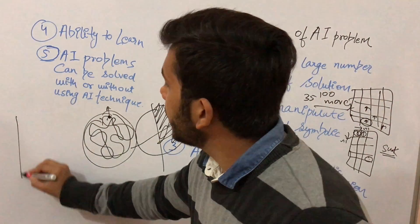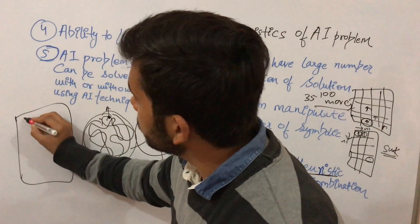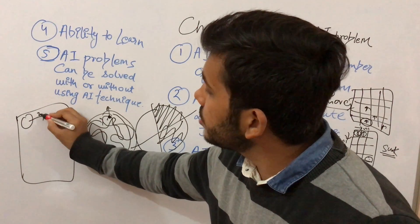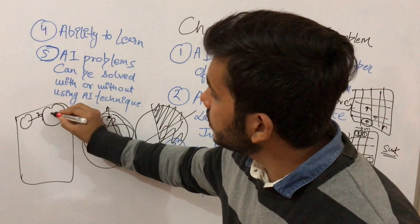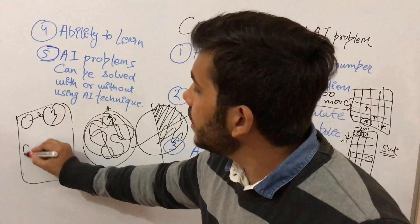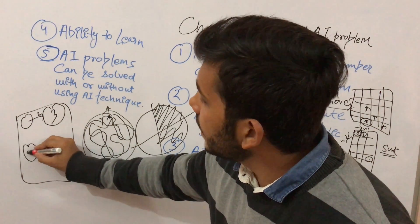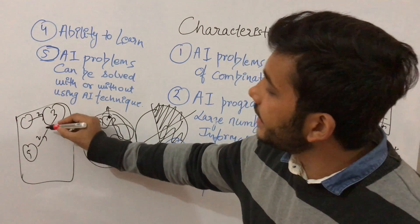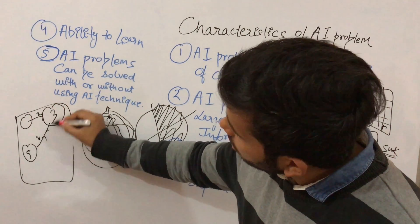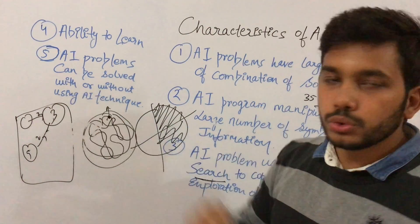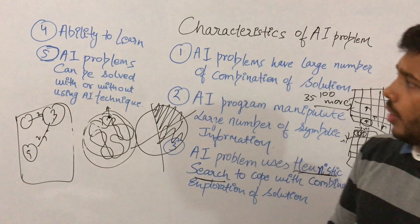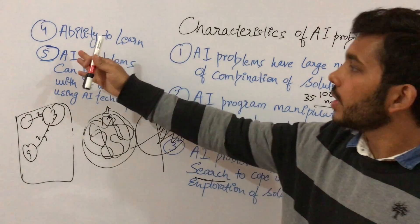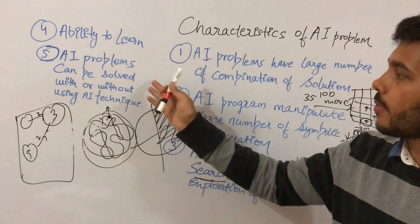The fourth characteristic is that artificial intelligence problems have the ability to learn. If you tell the system that whenever it sees state two, it should move to the third state, then again if it is in some state like the fourth state and sees two, it will automatically send the output to the third state.